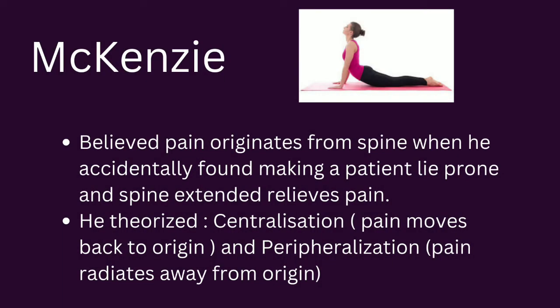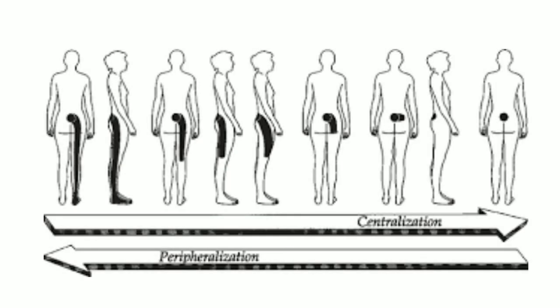McKenzie believed pain originates from the spine. He accidentally found that making a patient lie prone with the spine extended relieves pain, so he theorized centralization and peripheralization. Centralization means the pain moves back to its origin, and peripheralization means the pain radiates away from the origin.